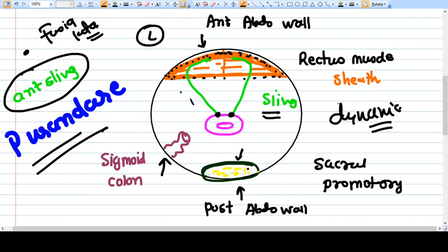Sacral promontory is a fixed structure, while this rectus sheath is not a fixed structure. It moves with the movement of abdominal wall, so it is a dynamic sling.